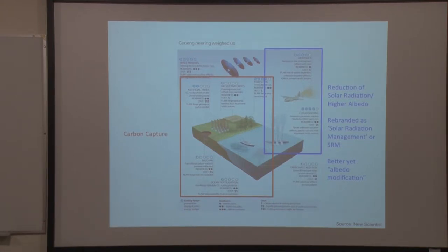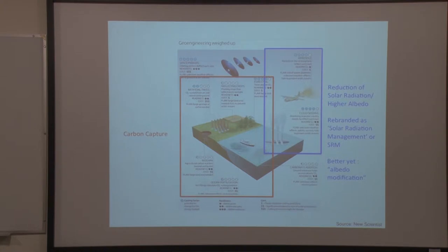SRM is a rebranded name for geoengineering. The reason I prefer the term albedo modification is that 'engineering' implies you know the outcome of what you're doing, and 'management' has the same implication. Albedo modification is really the correct term, because we don't know right now what the result is going to be — there's too much speculation. We can talk about wanting to modify albedo without being certain of the consequences.